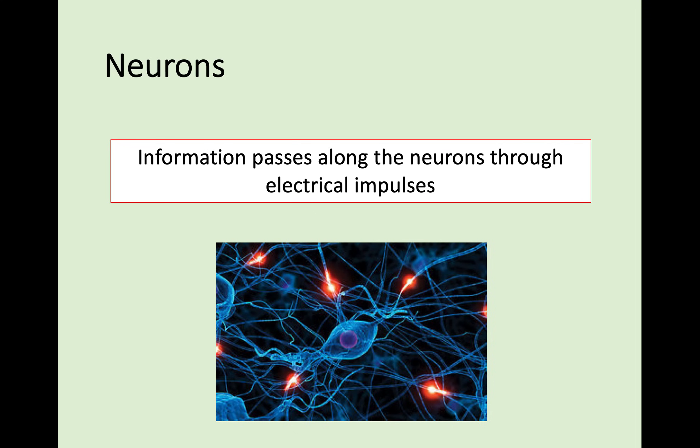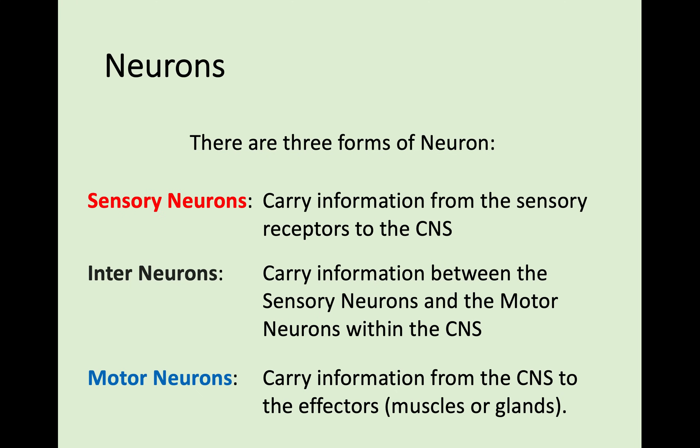So we're going to take a deeper look at neurons. Basically, information passes along neurons through electrical impulses — that's how all this information gets passed all around the nervous system. There are three forms of neuron. Sensory neurons pick up stimuli and carry information from your sensory receptors to the central nervous system. Interneurons carry information between the sensory neurons and onto the motor neurons within the central nervous system — they are found within your brain and spinal cord. Finally, motor neurons carry information from the central nervous system to effectors, which may be muscles or glands, facilitating the movement or reaction to whatever you picked up from your sensory receptors.